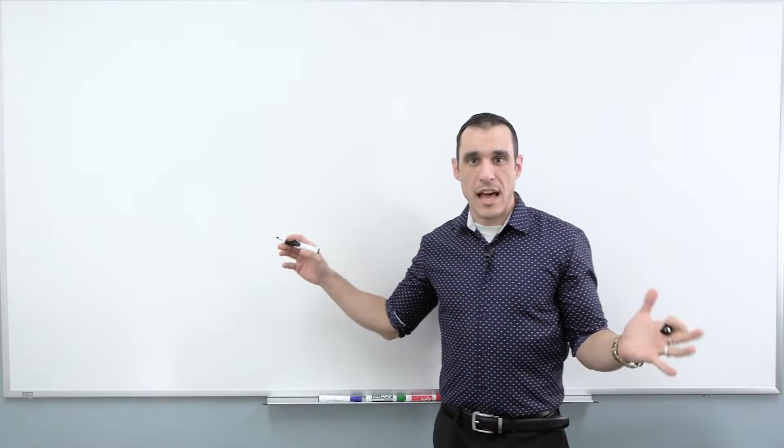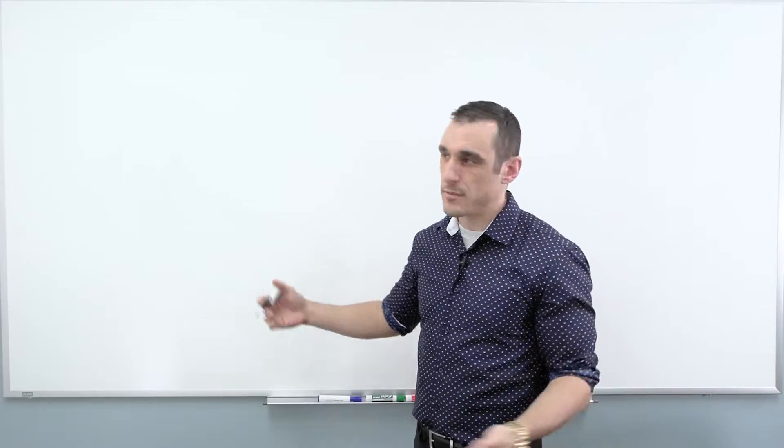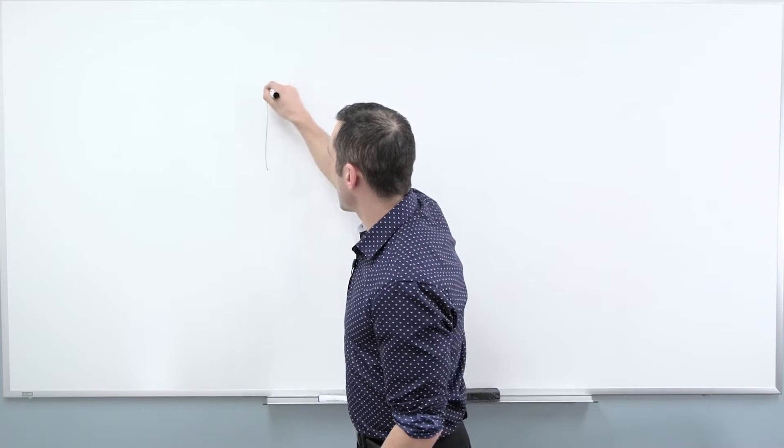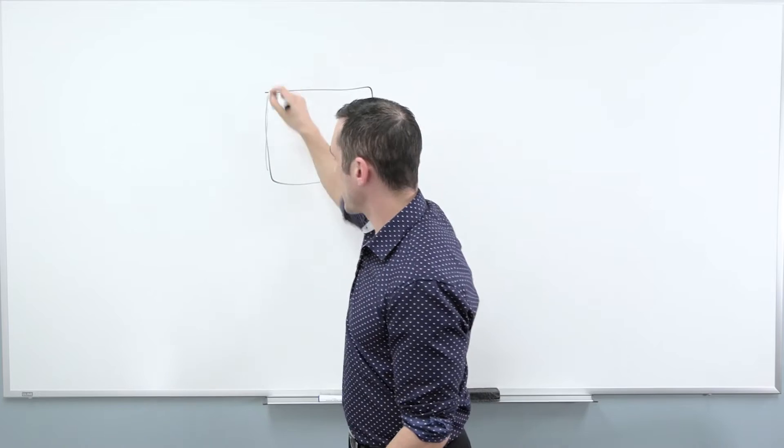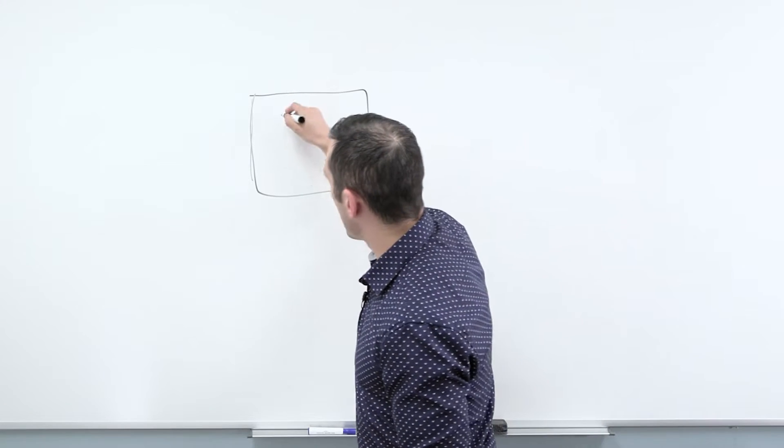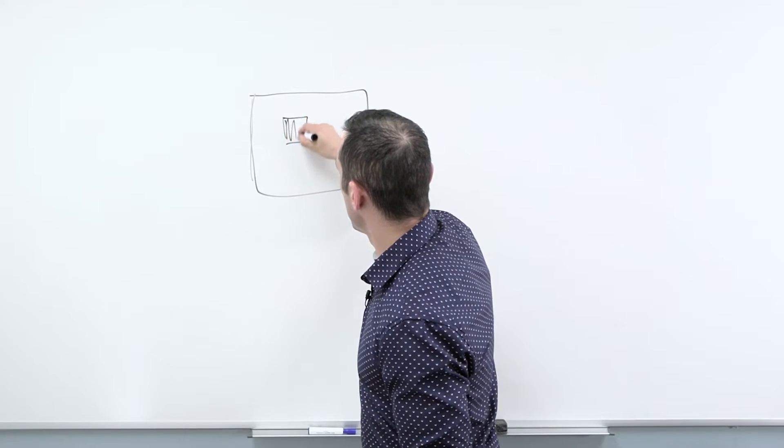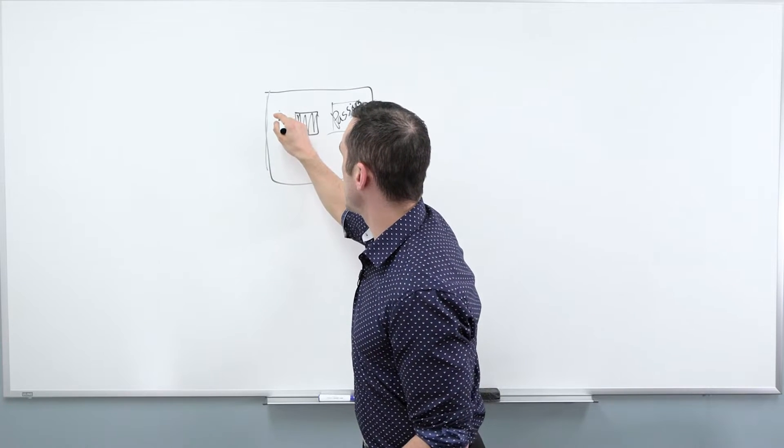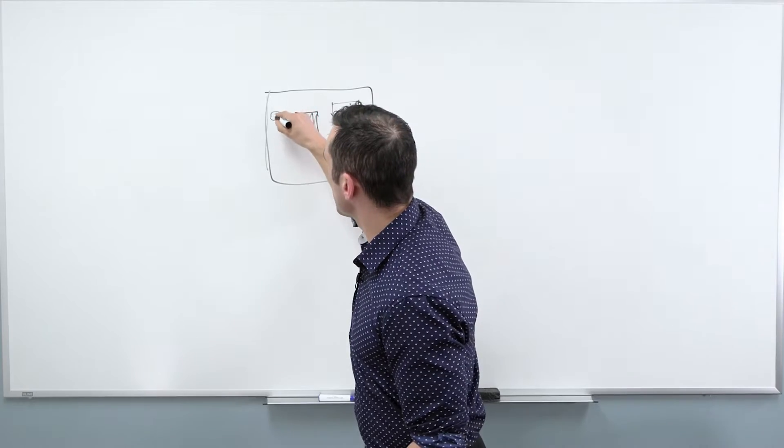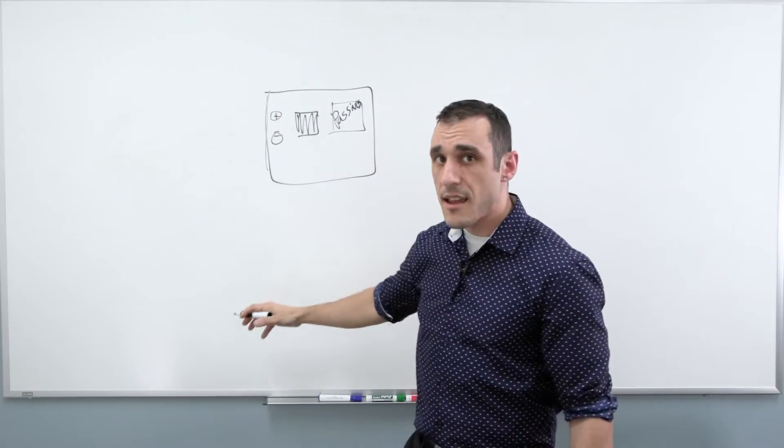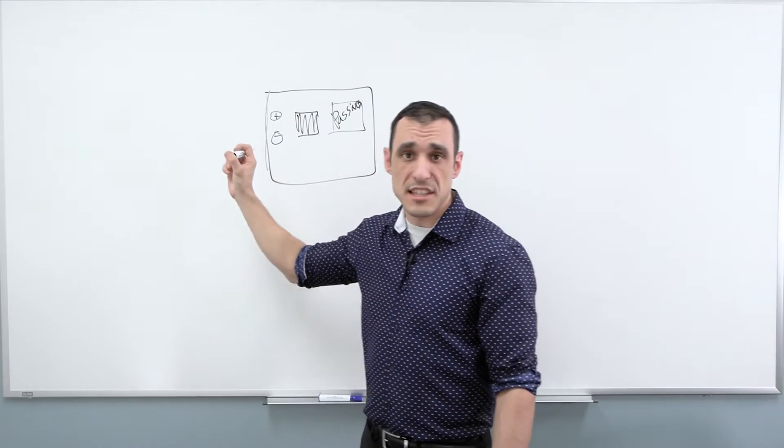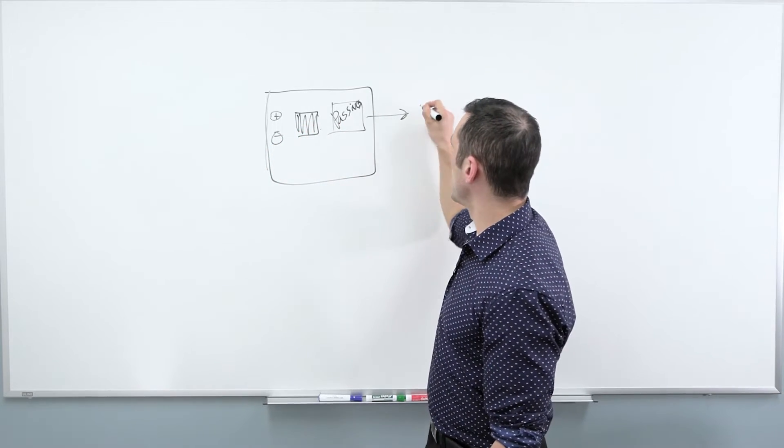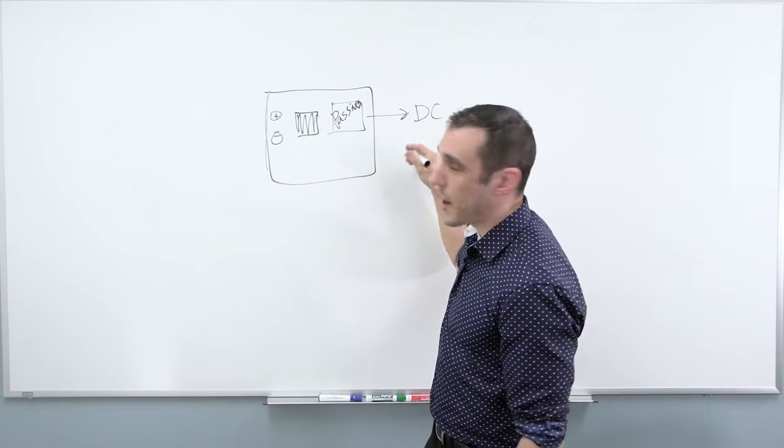In general, we have two classes of power supplies: non-isolated and isolated. In a non-isolated power supply, it's pretty simple. We basically just have our chips and some passives, and then we typically have some kind of input here. So here's our plus and here's our minus.